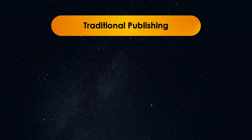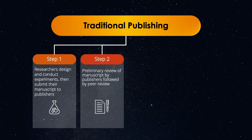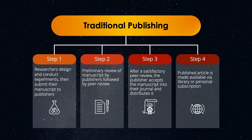Under the traditional publishing model, researchers first design and conduct experiments and then submit their manuscripts to the publishers. The publishers do a preliminary review of the manuscript to determine whether they are acceptable, then pass it on to be peer-reviewed. The reviewers suggest edits to the authors, who then try to address those comments. Once researchers satisfactorily address the reviewers' concerns, the publishers accept the manuscript, provide vetting and distribution services, and then publish the article in their journal. The published article is then made available to other researchers via journal subscriptions from libraries or personal subscriptions.